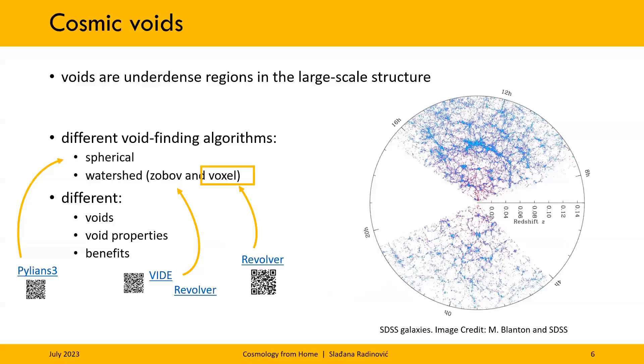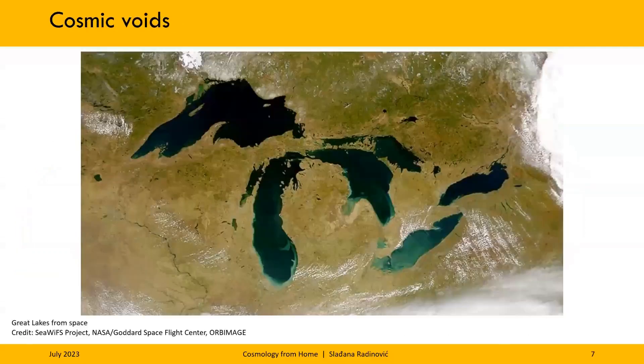The specific void finder that I use is this watershed void finder called Voxel. It puts all of the tracers on a grid and then smooths the field to estimate the density. And then it picks the lowest density point and starts filling the field with water, like a lake. So to not get too technical and run with this lake analogy, the center of the deepest point would be the center of the lake or the void, and then the shore would be the edge.